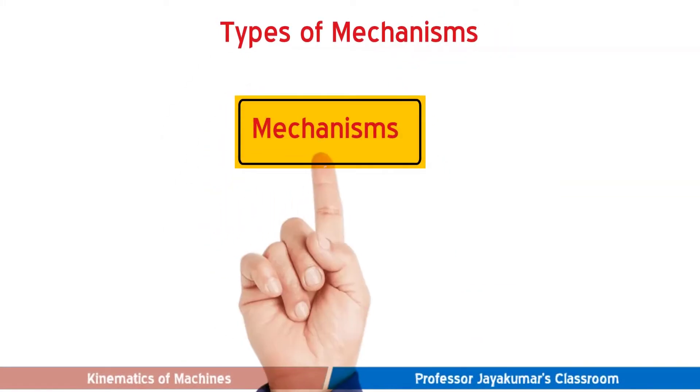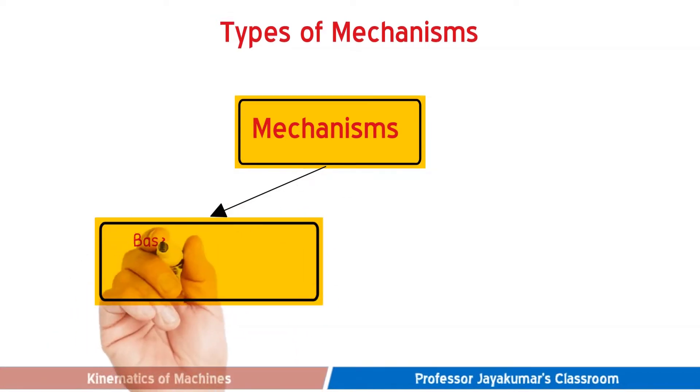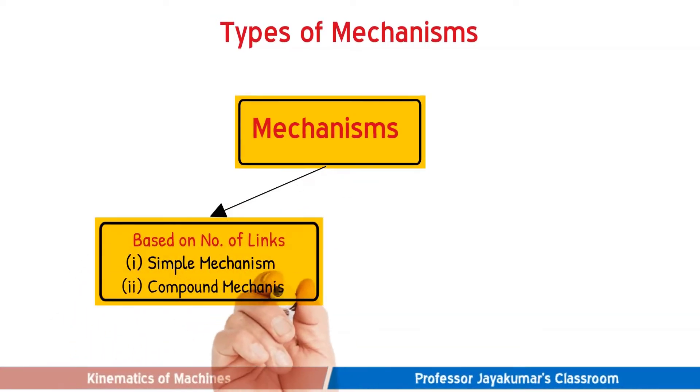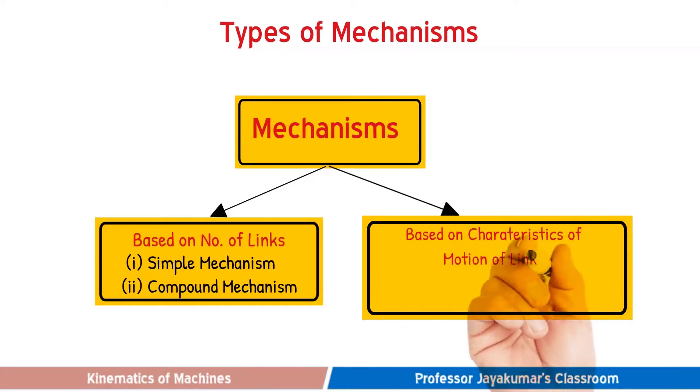Mechanisms can be classified based on number of links as simple mechanism and compound mechanism. Mechanisms can also be classified based on characteristics of motion of links as planar and spatial mechanisms. We will see them one by one now.